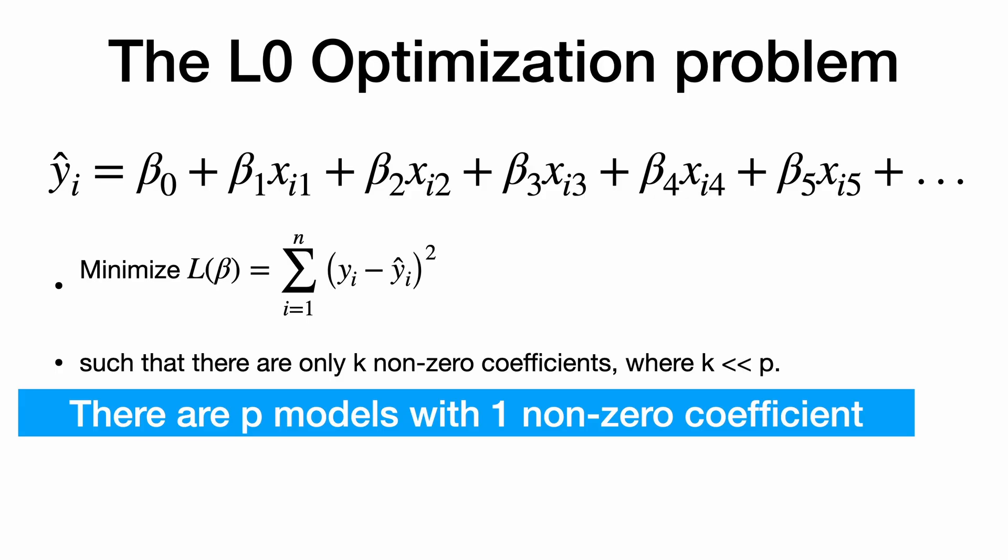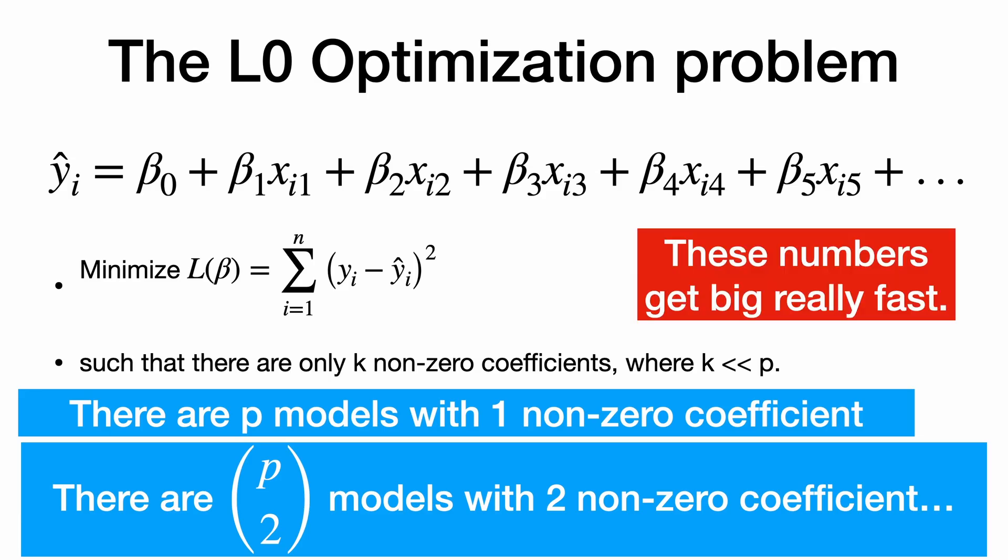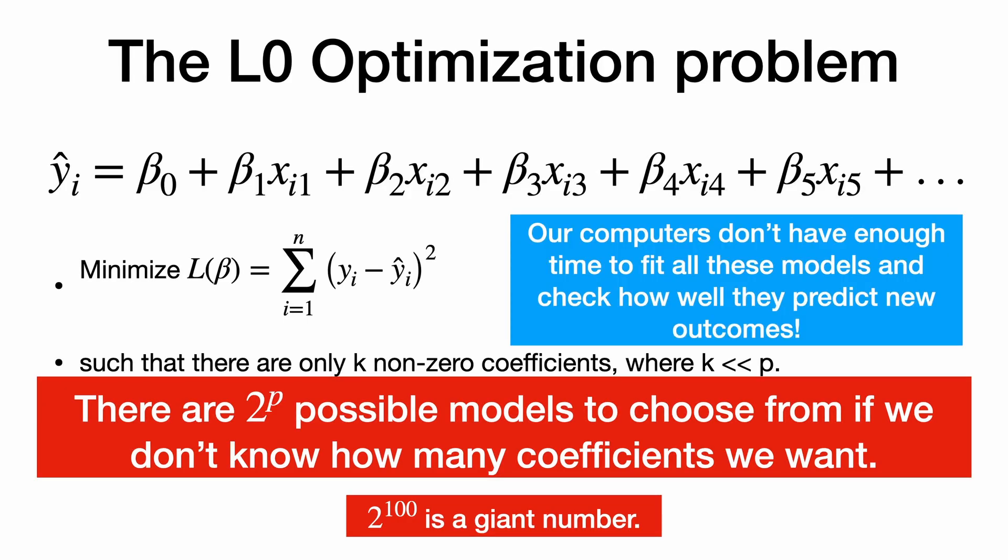Now, there are a lot of different possible models depending on which coefficients we choose to include. There are P different models with one non-zero coefficient. There are P choose two models with two non-zero coefficients. And these numbers get really big really fast. There are two to the P possible models to choose from if we don't know how many coefficients we want. Two to the 100th power, even, is a giant number.